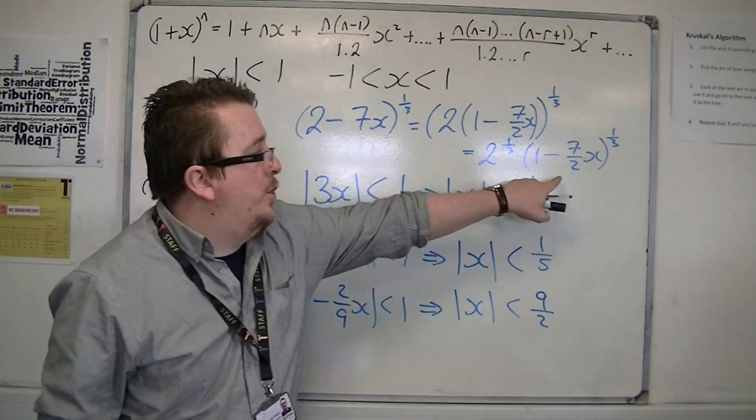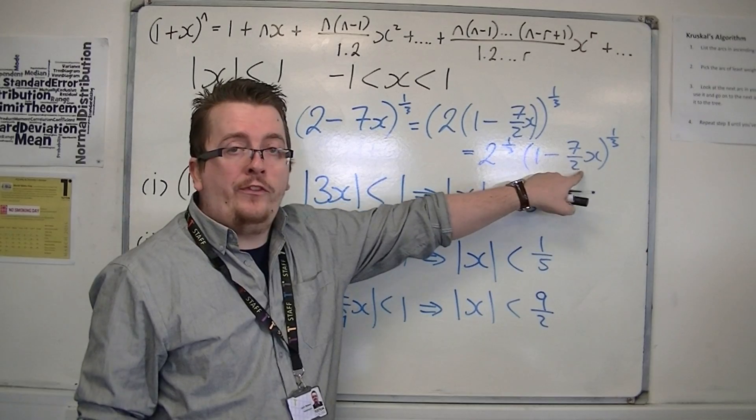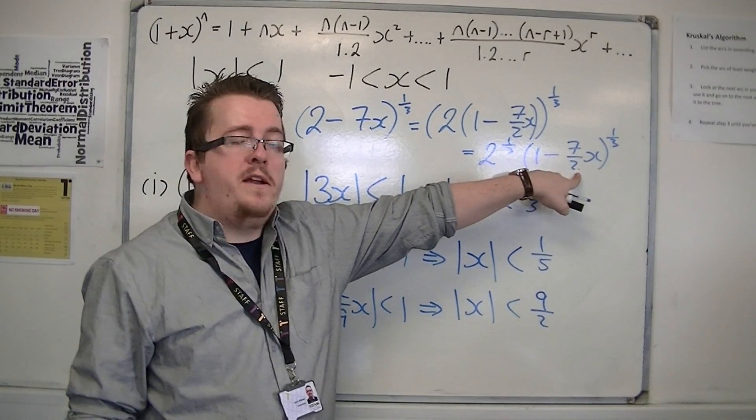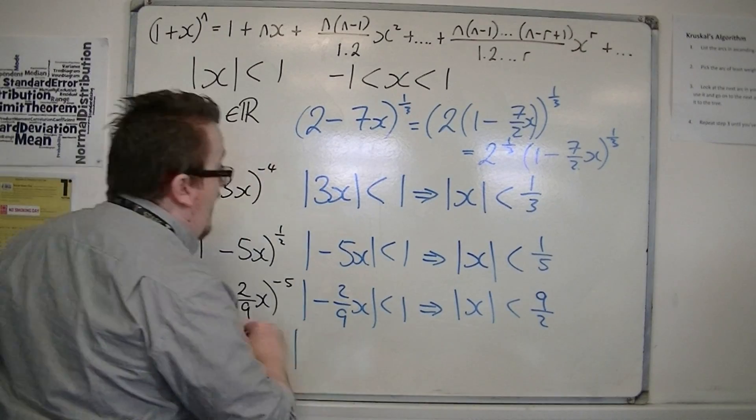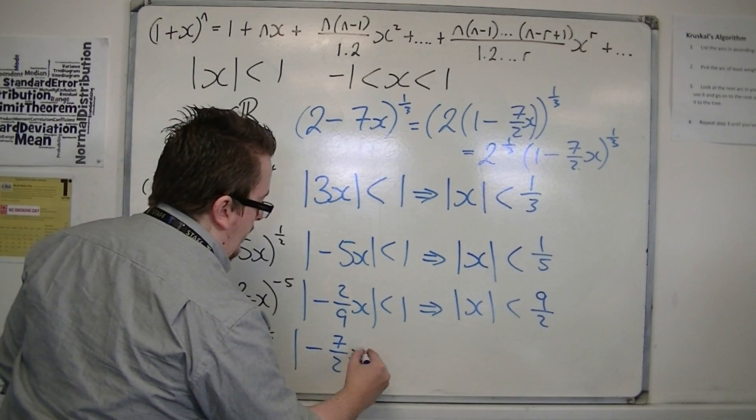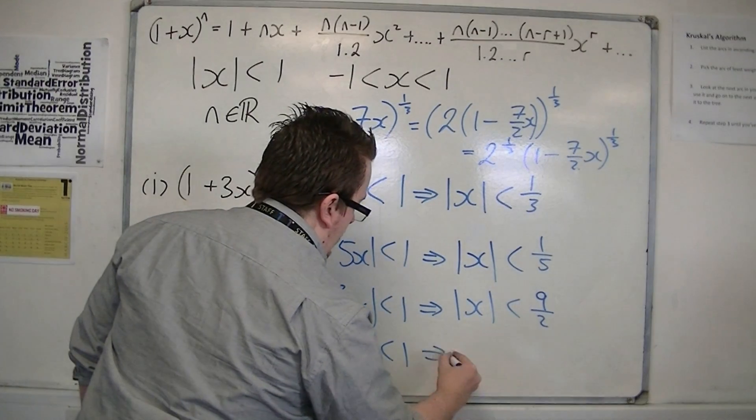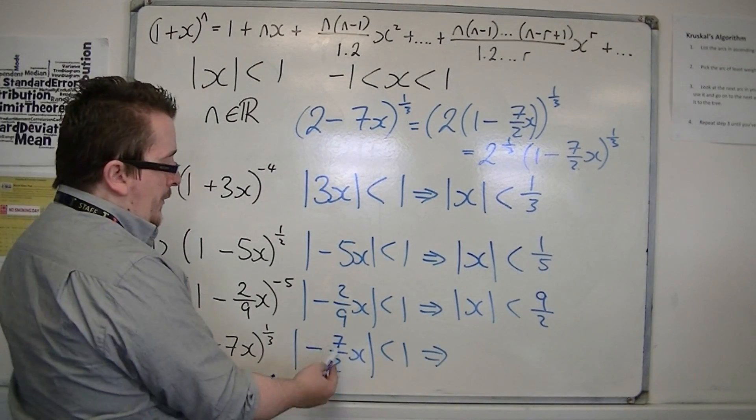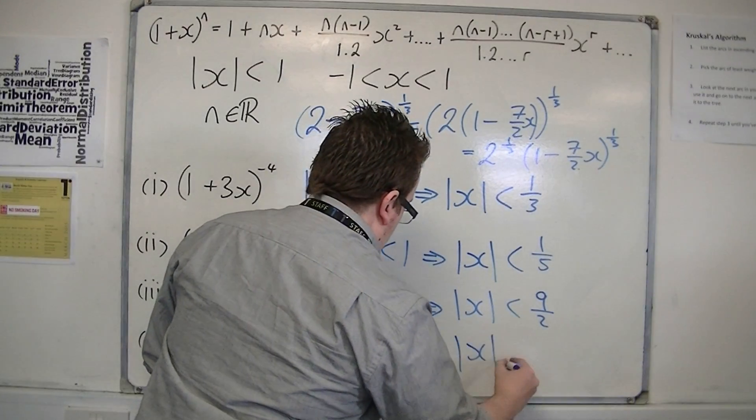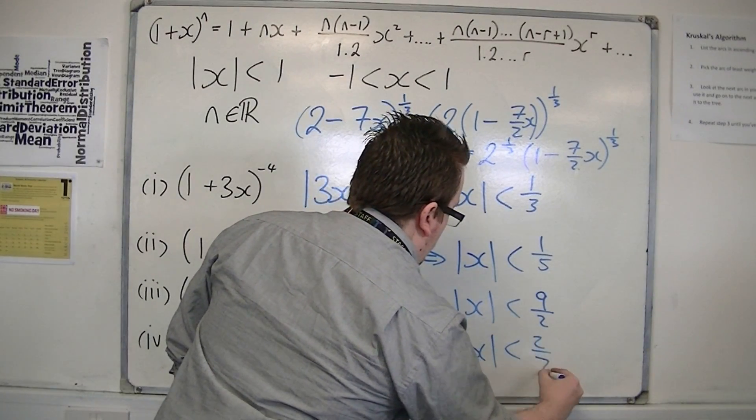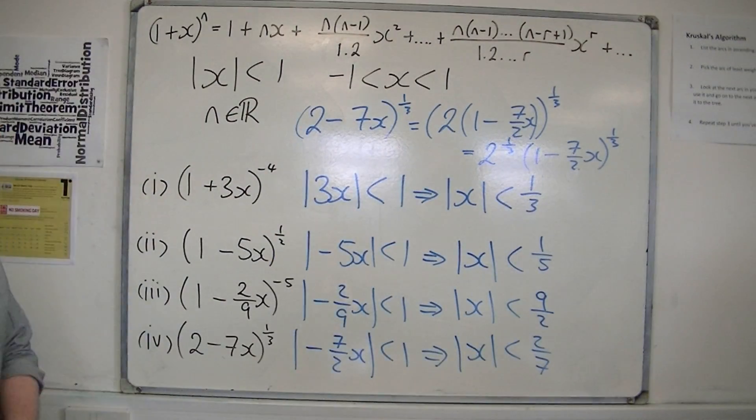It is looking at the range validity of this expansion, this 1 minus 7 halves x to the power of 1 third. So, I can replace the x with minus 7 halves x, divide both sides by the 7 halves, the modular sign takes care of the negative. And I get that mod x has to be less than 2 sevenths.